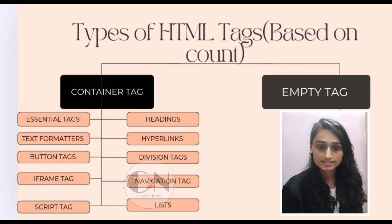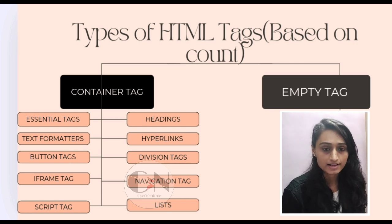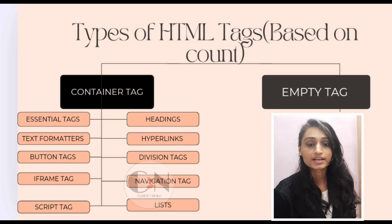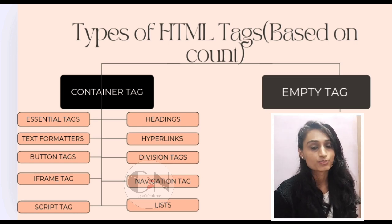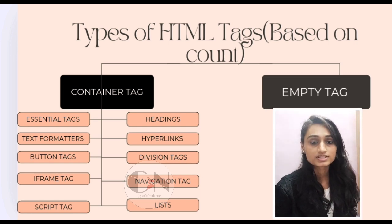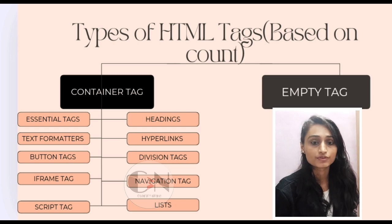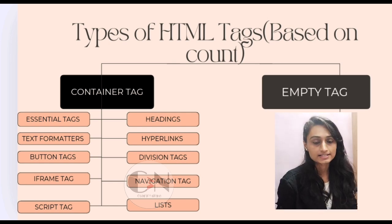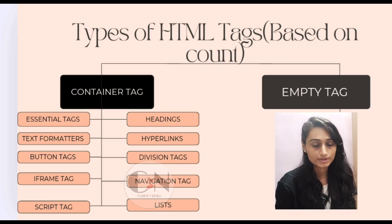Some commonly used container tags are the essential structural tags. The opening and closing HTML tag specifies that the document is an HTML file — all other tags for the web page are included between them. The opening and closing head tag contains the head part of the document, which holds information related to the web page. The opening and closing title tag stores the description of the web page.